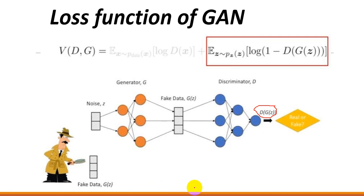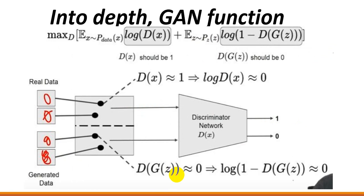At last, going into depth, let's talk about the equation. We have log of D(x) and log of 1 minus D of G(z). They represent both real and fake data, where D(x) should be 1 or greater, and D of G(z) should be 0 or less. Because we want to maximize our probability, but we want to minimize it from the generator's training, as these two contests are running — that is why 1 minus D of G(z) is written here. The discriminator outputs 0 or 1, returning the probability.